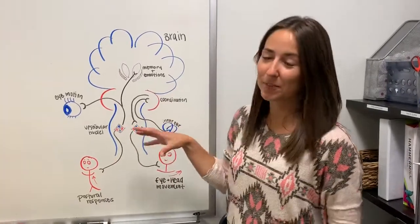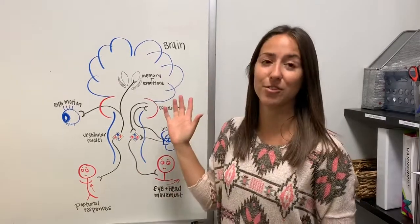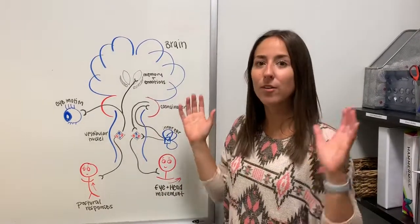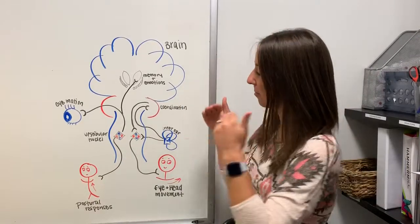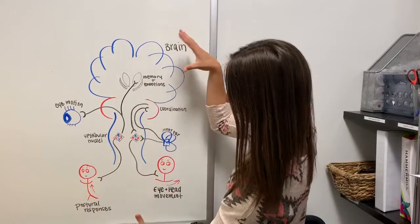Our vestibular system controls a lot of parts of our brain and is involved in a lot of different areas. These little guys right here are where all of our information from our inner ear comes in, and then from there they go all throughout the body.